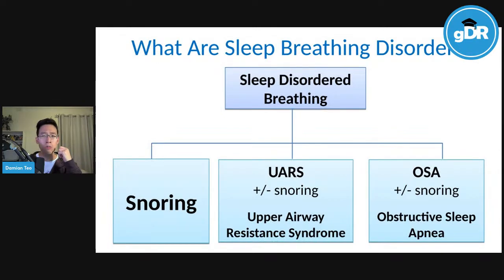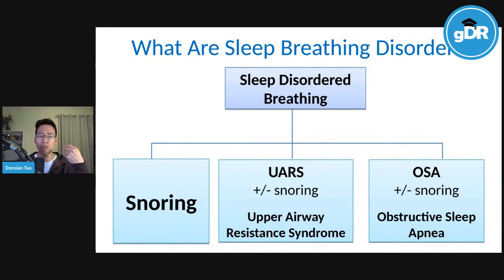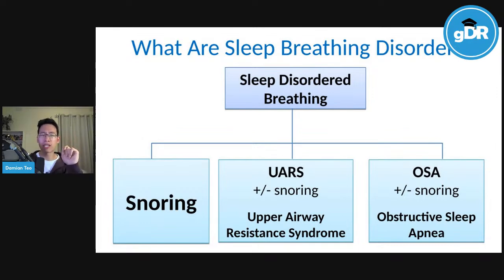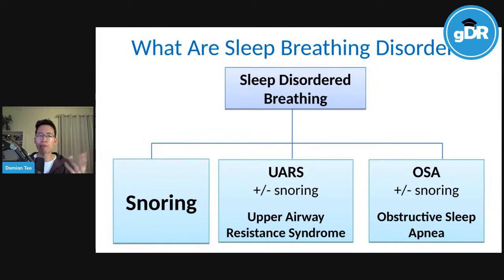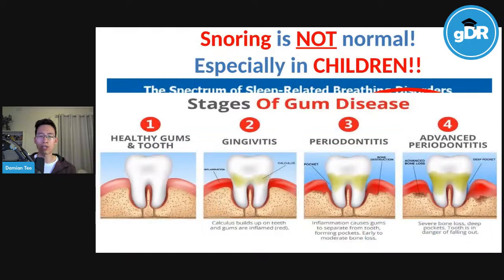Sleep disordered breathing (SDB) is an umbrella term incorporating snoring, upper airway resistance syndrome (UARS), and obstructive sleep apnea. A big mistake many doctors and dentists make is separating these three entities and thinking they're three separate conditions — but they're not.